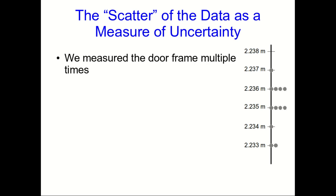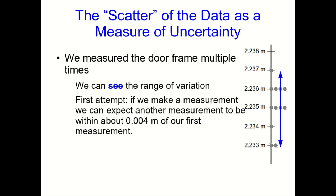We can see something about the range of variation, because we've taken multiple measurements, and so we can see directly that there is a range of variation. A first attempt at answering what's our expected range of variation is just directly from that data. If we make a measurement, we can expect another measurement to be within about 4 millimeters of our first one. But that's our maximum range of variation. It looks like it's pretty rare for two measurements to disagree by that much.